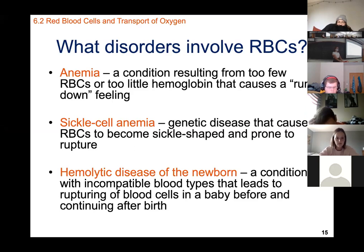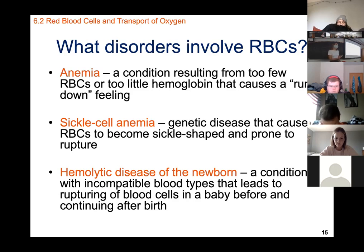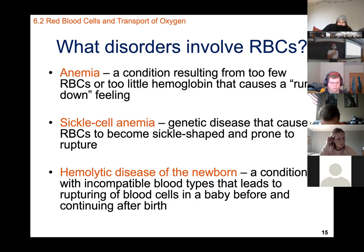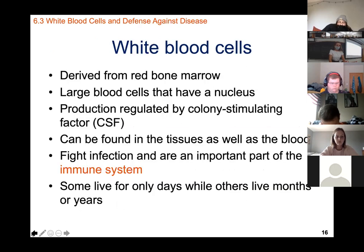Hemolytic disease of the newborn is a condition where incompatible blood types between mother and baby leads to rupturing of the baby's blood cells before and after birth. For example, if mom is type O and baby is type A, mom's anti-A antibodies can affect the fetus. There aren't always complications, but there can be.